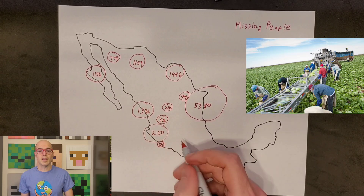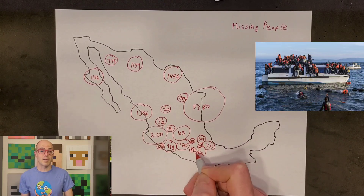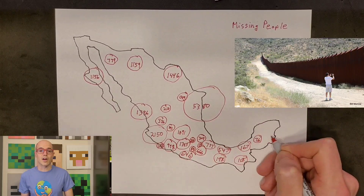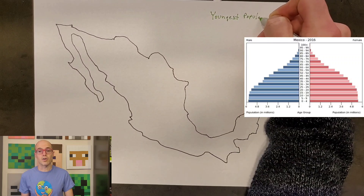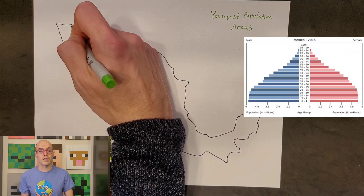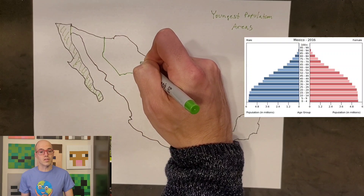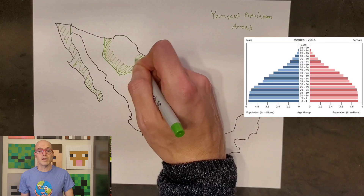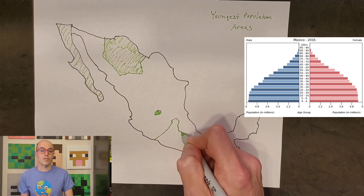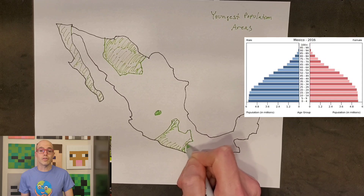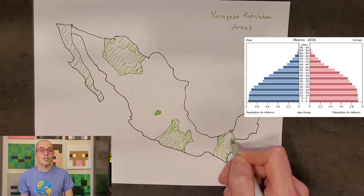Overall, migration continues to be a dynamic process in Mexico, reflecting both domestic and global socioeconomic dynamics. Mexico's age demographics are characterized by a gradually aging population alongside a significant youth demographic. The country has experienced a demographic transition with declining birth rates and increasing life expectancy. The proportion of elderly citizens aged 65 and above has been steadily rising, driven by improvements in health care and living standards. Conversely, Mexico still has a sizable youth population, with a significant portion under the age of 25, presenting both opportunities and challenges including the need for education, employment, and social services.